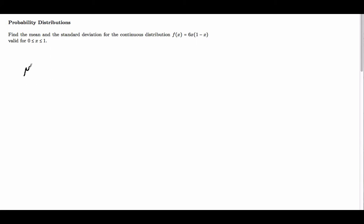So the mean for a continuous distribution is given by the integral from A to B, X times the probability distribution integrated with respect to X.